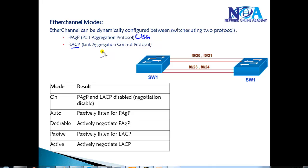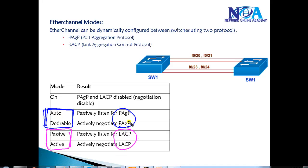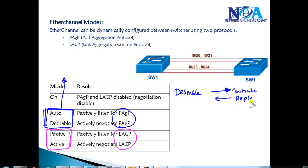There are different modes for each protocol. For PAgP, the two modes are 'desirable' and 'auto'. For LACP, the modes are 'active' and 'passive'. The desirable and auto modes are similar to DTP modes in trunking. 'Desirable' actively initiates PAgP messages and also replies if the other side initiates. 'Auto' will not initiate — it only replies to PAgP messages.